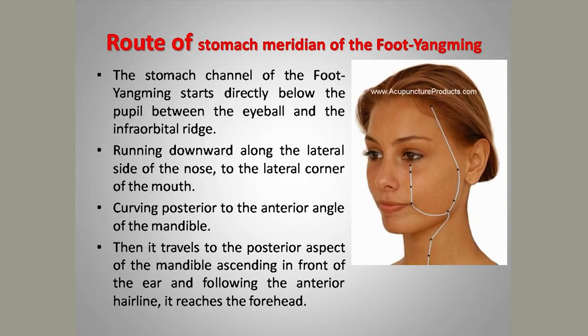The stomach meridian starts from the face, at the point near the nose, lateral to the ala nasi. It runs to the medial canthus, then descends downwards along the angle of the mouth, winds around the angle of the mouth, and divides into ascending and descending branches. The ascending branch ascends upward from the angle of the mandible, takes a U-shape, runs in front of the ear, reaches the angle of the forehead, and connects with the governing vessel meridian.